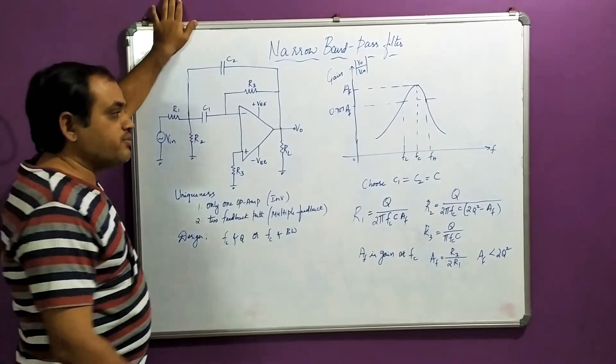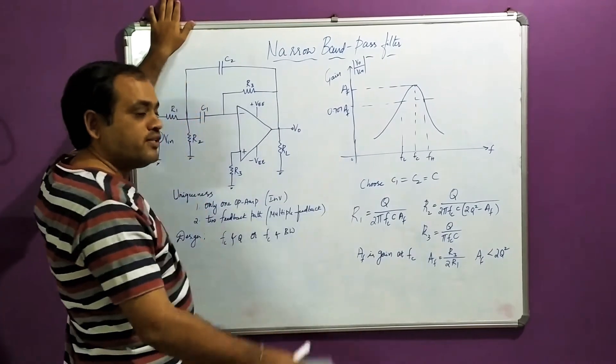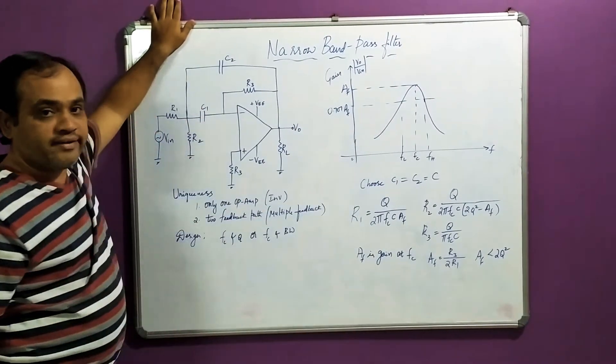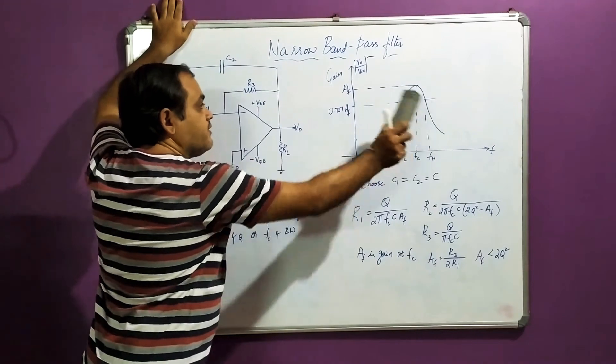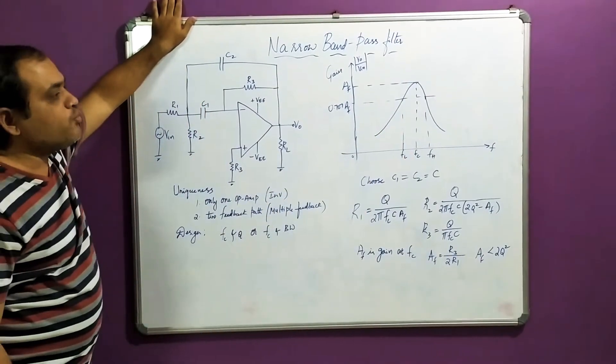In the wide band pass filter we observed the frequency response. The pass band was a little bit wider. Now in this case we can observe the pass band is almost narrowed.